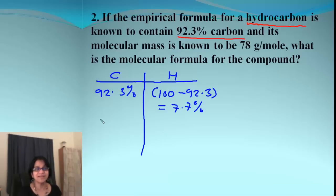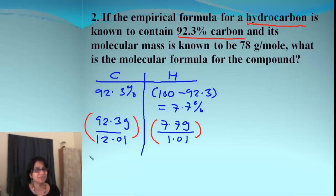Moving on. So we get 92.3 grams and 7.7 grams. Remember what we did after that? Percent to mass and mass to moles. For moles, we divide by the molar mass for each element. The moles I got for carbon is 7.685 and for hydrogen it is 7.624.